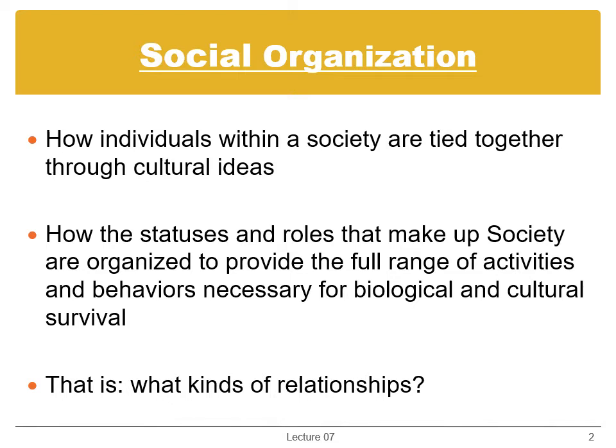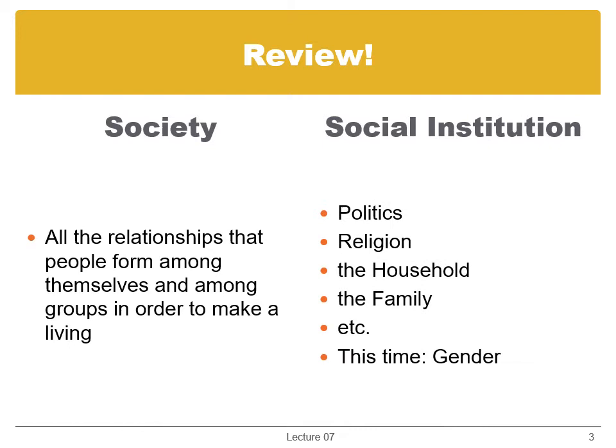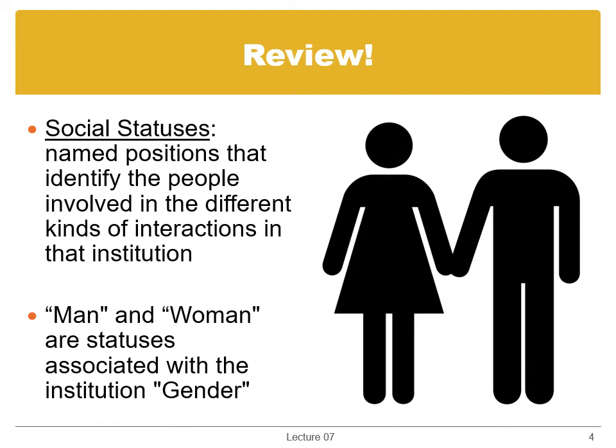This lecture's topic in particular is gender, but before I dive into that, let's review a bit. Society refers to all the relationships that people form among themselves and among groups in order to make a living. Social organization operates on a variety of levels, the largest of which is the social institution, which is easier to grasp by examples than by definition. Politics, religion, the household, the family — these are all social institutions. Here, we'll be dealing with the institution of gender. But institutions are not the basic units of social organization — those are social statuses.